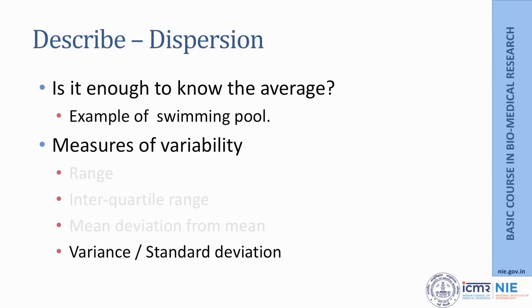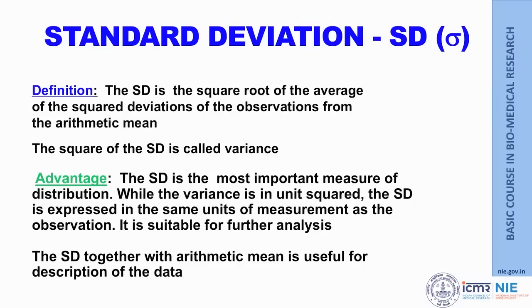To overcome this, we take the difference of each observation from the mean and square them — squaring eliminates negative signs — then take the average of the squared deviations. This value is called variance. Since we squared the values, the units are also squared, so we take the square root, and that is called standard deviation (SD). Standard deviation is the square root of the average of the squared deviations from the arithmetic mean. While variance is in squared units, standard deviation is expressed in the same units as the original measurement, making it suitable for further analysis.